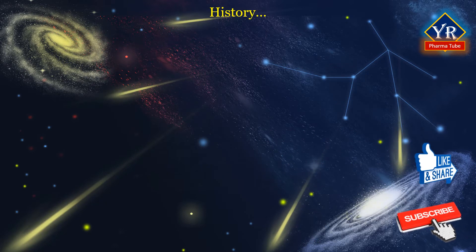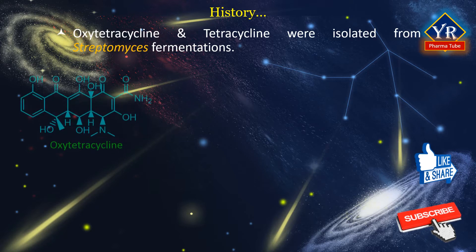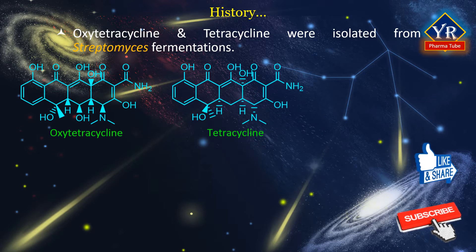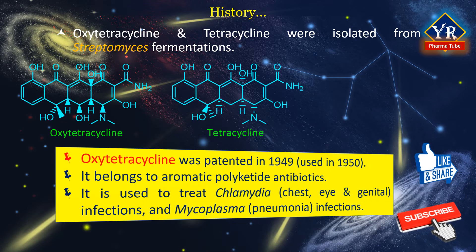Following the discovery of chlorotetracycline, oxytetracycline and tetracycline were isolated from related Streptomyces fermentations. Oxytetracycline was patented in 1949 and came into commercial use in 1950. It belongs to a class of aromatic polyketide antibiotics produced by Streptomyces. It is used to treat infections caused by chlamydiae, such as chest, eye and genital infections, and infections caused by mycoplasma organisms such as pneumonia.